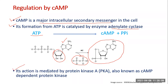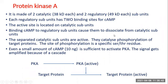The action of cyclic AMP is mediated by protein kinase. This specific protein kinase mediates the action of cyclic AMP and is called Protein Kinase A, or PKA, also known as cyclic AMP-dependent protein kinase. Protein Kinase A is made up of two catalytic subunits, each around 38 kilodaltons, and two regulatory subunits, each 49 kilodaltons.